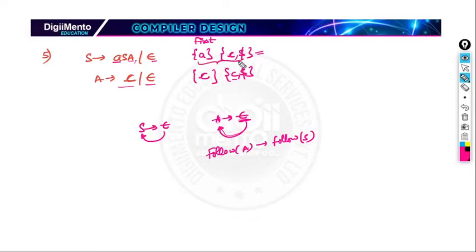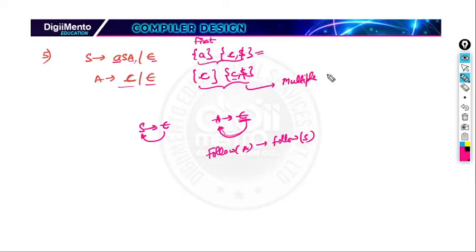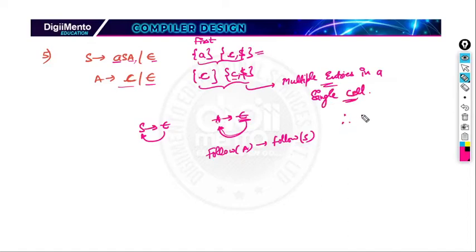Now comparing these two productions: here we have 'a', and the other has c and dollar — nothing in common. But then comparing A's productions: we have c here and c here as well. There is a conflict — multiple entries in a single cell. So this grammar is not LL1.